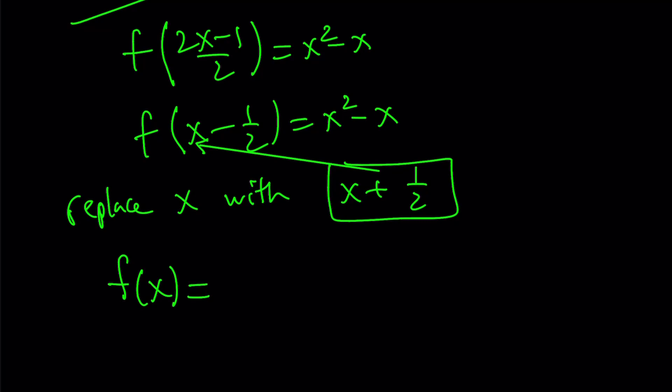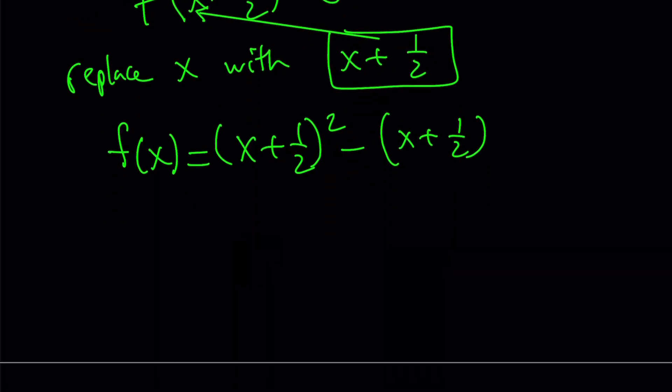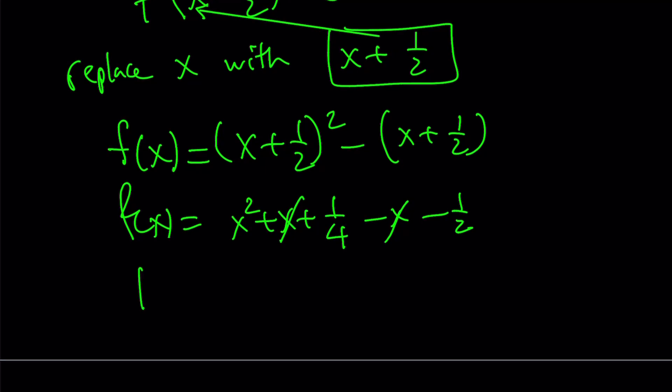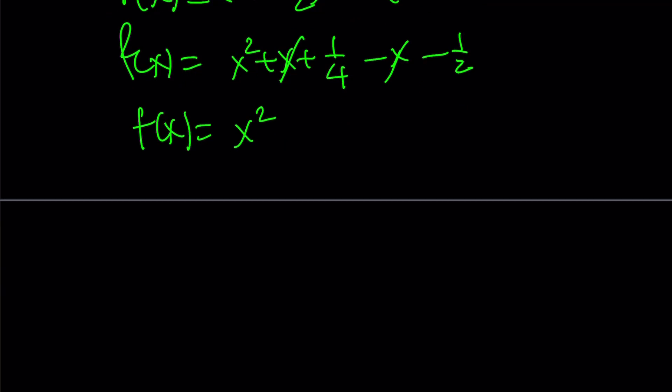On the right-hand side, remember we're replacing x with x plus 1 half. So we get x plus 1 half squared minus x plus 1 half. And this is going to give us x squared plus x plus 1 fourth minus x minus 1 half. And here, x is going to cancel out, leaving us with f of x equals x squared plus 1 fourth minus 1 half is going to give us minus 1 fourth.